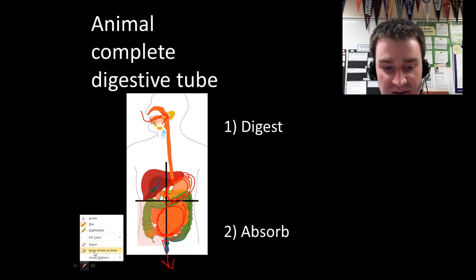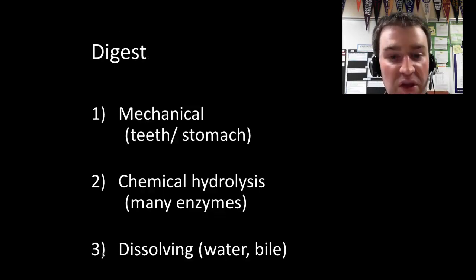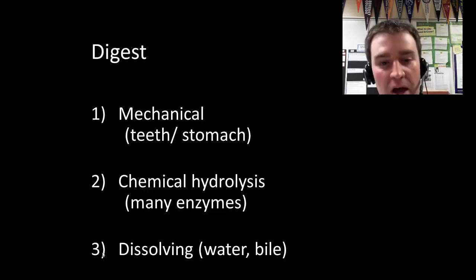Again, broadly, our goal is to digest first and then absorb. Let's talk about digestion first. There are really three different ways of digesting food to increase its surface area. Remember, that's the point of digestion. We want to increase the surface area of the food so that we can pull particular nutrients into the bloodstream.